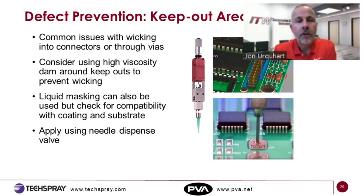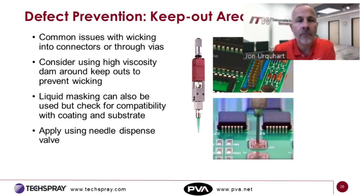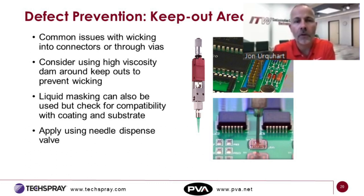When it comes to conformal coating, we always try to approach this as a selective process — trying to do this without masking and with minimal handling. Sometimes you may have issues with wicking into connectors or open vias. In that case, look for a higher-viscosity compatible coating to use as a gel or dam around sensitive areas. Liquid masking can also be applied to protect test points or ground planes. These are all easily dispensed with needle dispense valves, typically within the same machine.